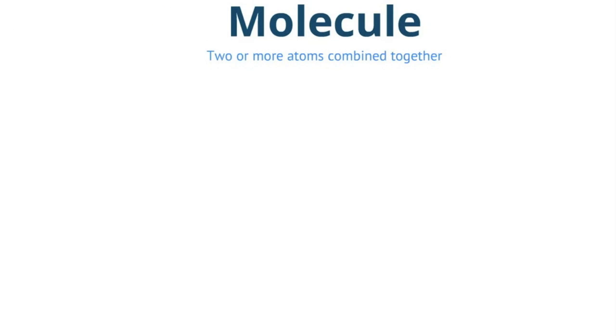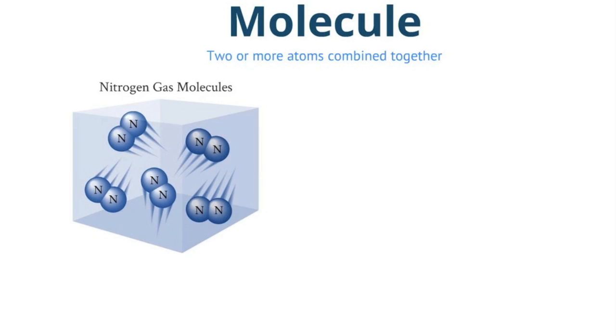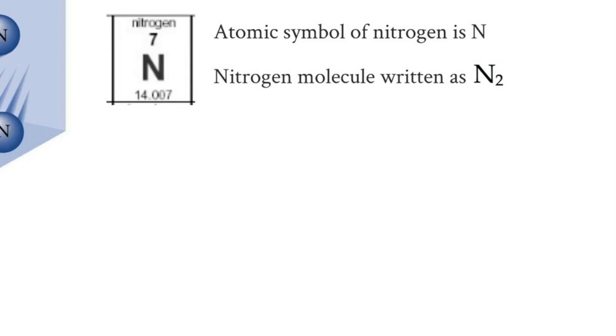Now, let's talk about molecules. Molecules are two or more atoms combined together. For example, I have some nitrogen gas molecules inside of this box, and as you can see, they come in pairs. Many elements exist only as molecules. Nitrogen has an atomic symbol of N, and we'll write that nitrogen molecule as N2. That little number next to the atomic symbol is called the subscript, and it tells you how many atoms there are of that element. So this is telling us that we have two nitrogen atoms bonded together to create a nitrogen molecule.